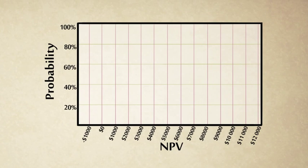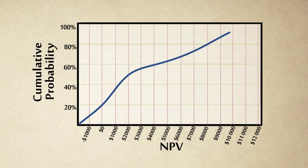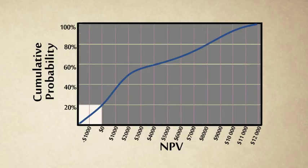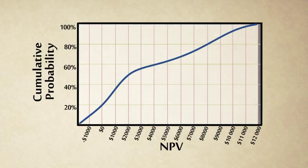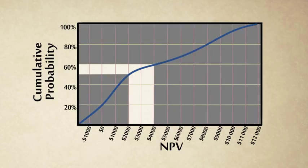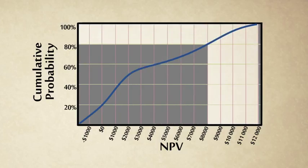Or we can take the same data and build a cumulative probability graph. So how we would read this is that there's a 20% chance that our project will have a net present value of zero or less. There is a 100% chance that our net present value will be 12,000 or less. There is a 10% chance that our net present value will be between 2,000 and 4,000.